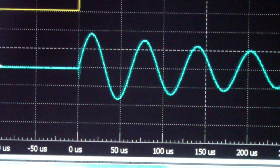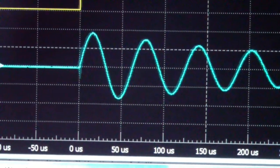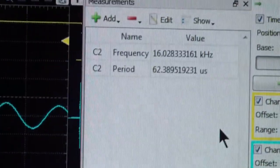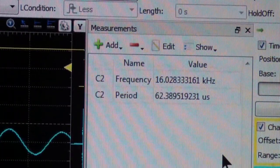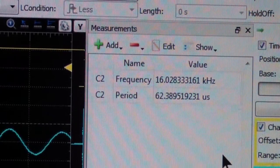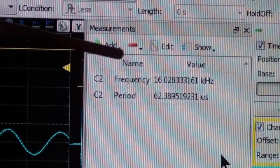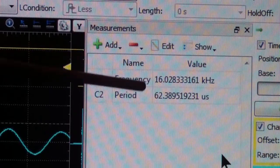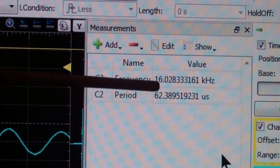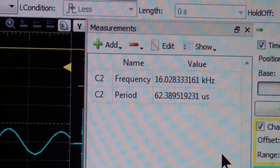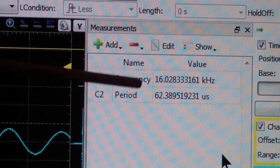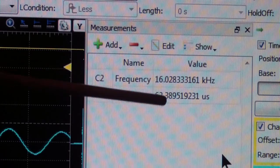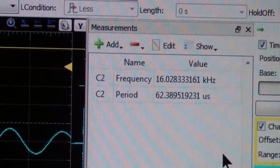To measure more accurately, as shown in the last project, we set up a horizontal defined measurement. I have the frequency and period set up. The period shows about 62.3, call it 62.4 microseconds, and the frequency is 16.0 kilohertz.